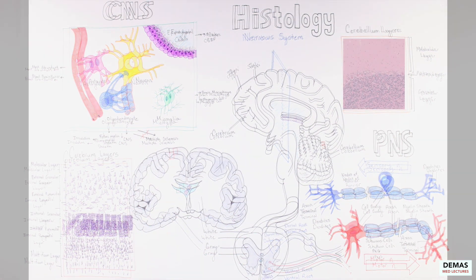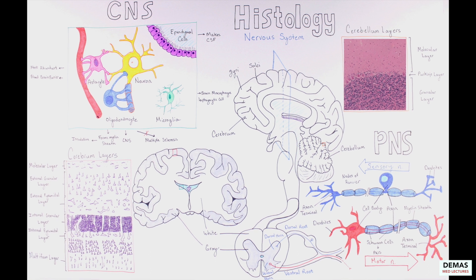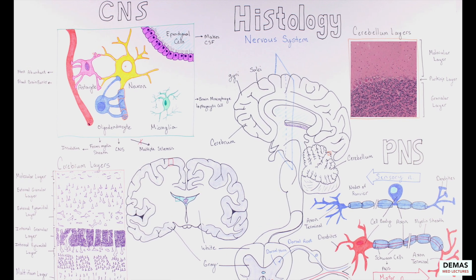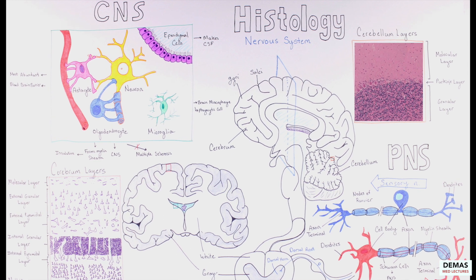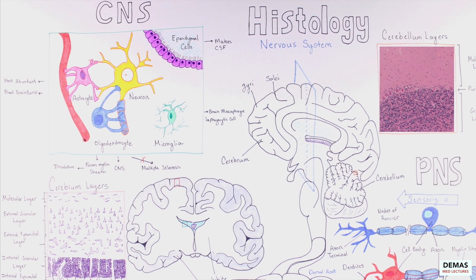And with that, we are finished with the topics for this mini lecture. Let's take a moment to summarize what we've learned. First, there are two main divisions of the nervous system which we have discussed: the central nervous system, the brain and the spinal cord, and the peripheral nervous system, which includes everything else. There are different cells as part of each of these divisions.